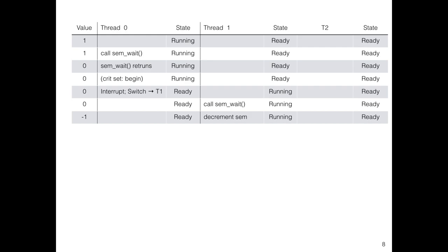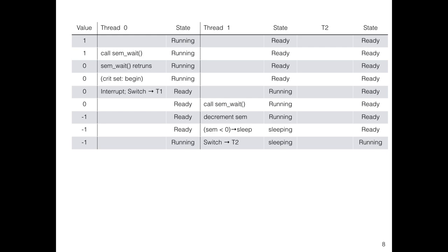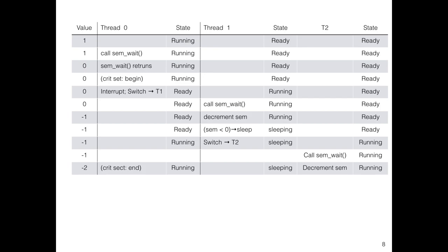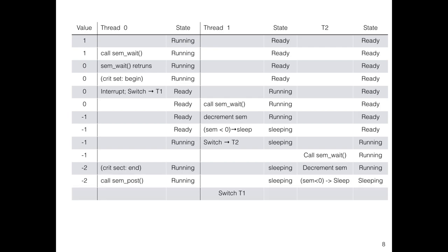The semaphore decrements to minus one—less than zero, so it goes to the blocked state. Thread T2 is brought to running, calls sem_wait again, value becomes minus two, indicating two waiting threads. It also goes to sleep. Now sem_post is called for thread zero—the critical section completed. sem_post increments the value by one (it becomes minus one) and wakes up one thread, say T1.